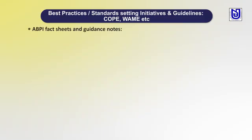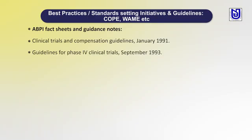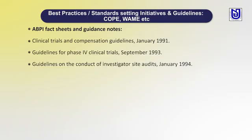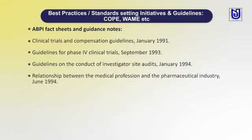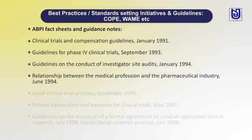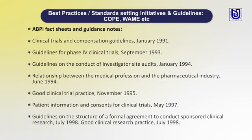The ABPI practices include guidelines for clinical trials and comprehension, guidelines for phase 4 clinical trials, guidelines for conduct of investigation and site conduct, the relationship between medicinal and pharmaceutical industry conduct, and general medical councils or good medical practices — they have different guides and conducts.